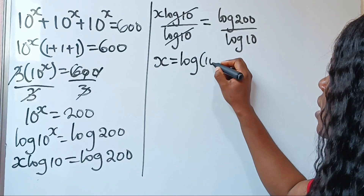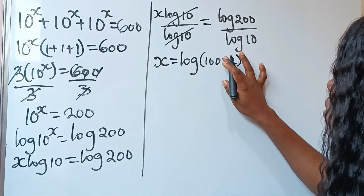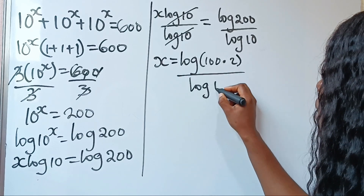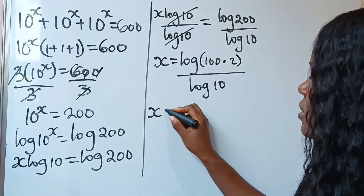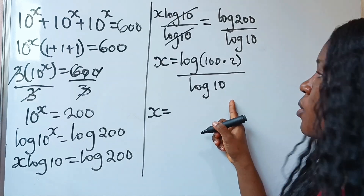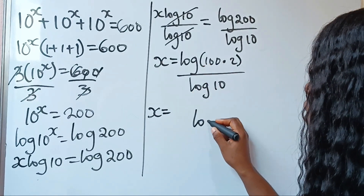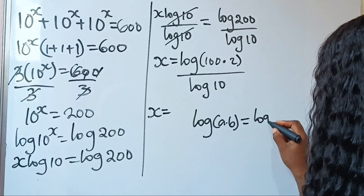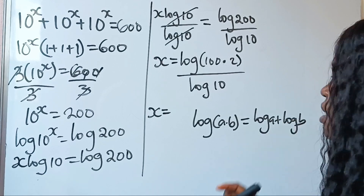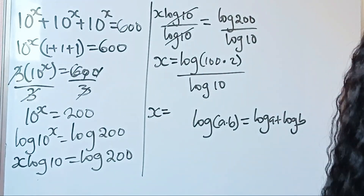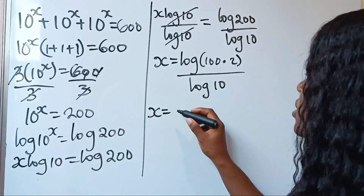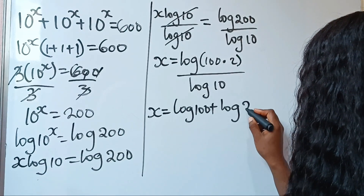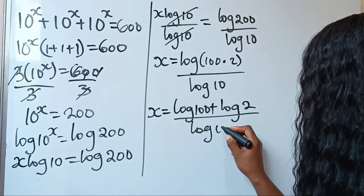Now, log 200 can be expressed as 100 times 2, so this is multiplication: 100 multiplied by 2, divided by log 10. We can distribute the denominator. But before that, recall that log A multiplied by B is equal to log A plus log B. Therefore, we can rewrite the numerator as log 100 plus log 2, divided by log 10.